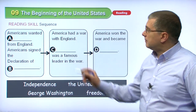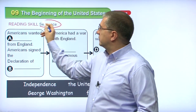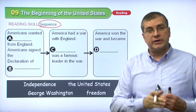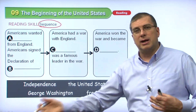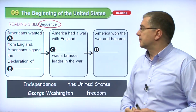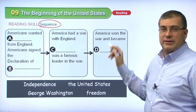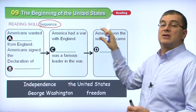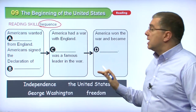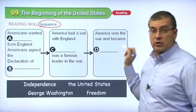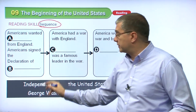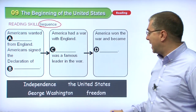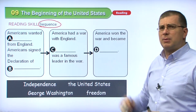We have a reading skill — we're talking about sequence. Sequence means in time order: what's first, second, third, fourth, and so on. We can see three events that happened in sequence. This happened first, this happened second, and this was the last thing that happened. We need to fill in the blanks using these words: independence, the United States, George Washington, and freedom.